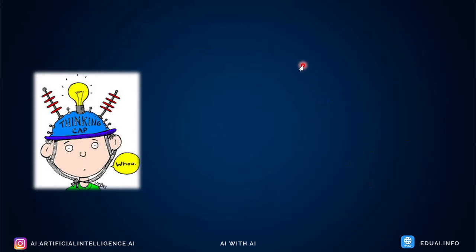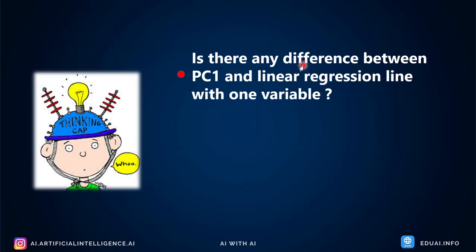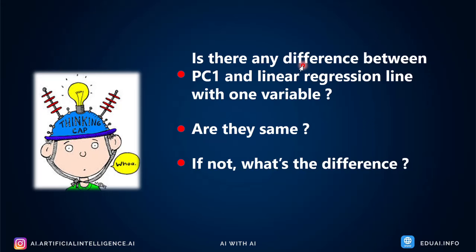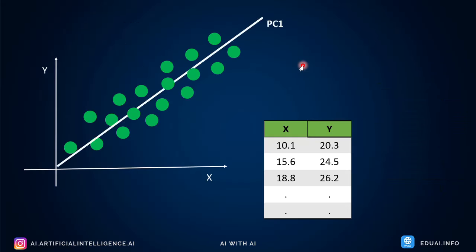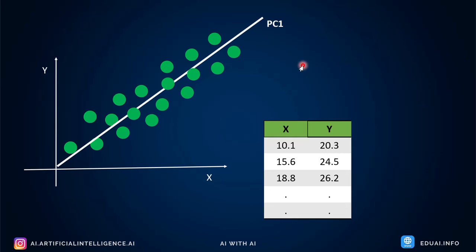Here's a question for you: is the PC1 line the same as a linear regression line? Answer in the comments below. If they are not the same, what's the difference? The line we draw along the data is a best-fitting line — just like in linear regression — so does that mean PC1 is exactly the same as a linear regression line? Leave your answer in the comments.